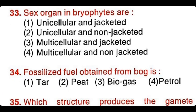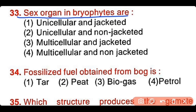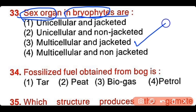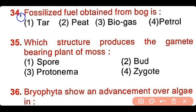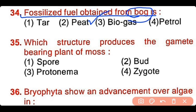Question number 33: The sex organs in bryophytes are unicellular and jacketed, unicellular and non-jacketed, multicellular and jacketed, or multicellular and non-jacketed. The correct answer is option 3 — the sex organs in bryophytes are multicellular as well as jacketed. Question number 34: The fossilized fuel obtained from bog moss is tar, peat, biogas, or petrol. The correct answer is option 2. Peat is obtained from the bog moss.